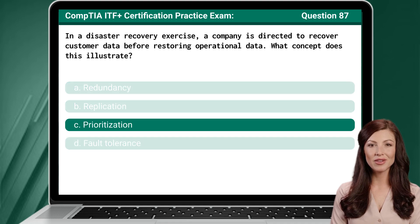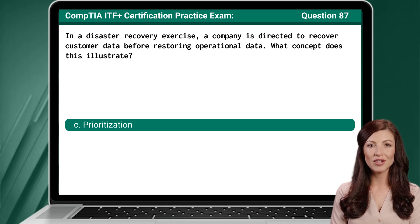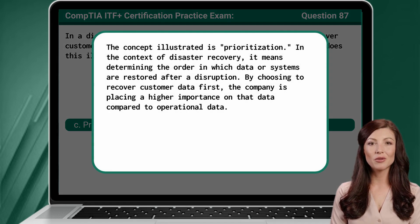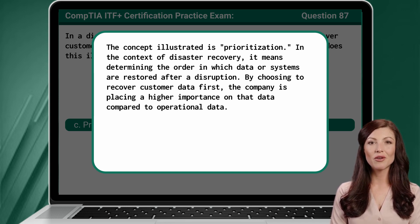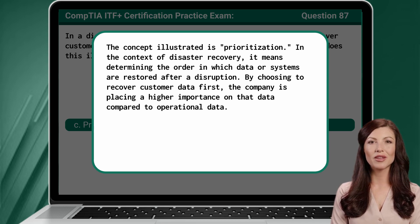The answer is C. Prioritization. The concept illustrated is prioritization. In the context of disaster recovery, it means determining the order in which data or systems are restored after a disruption. By choosing to recover customer data first, the company is placing a higher importance on that data compared to operational data.